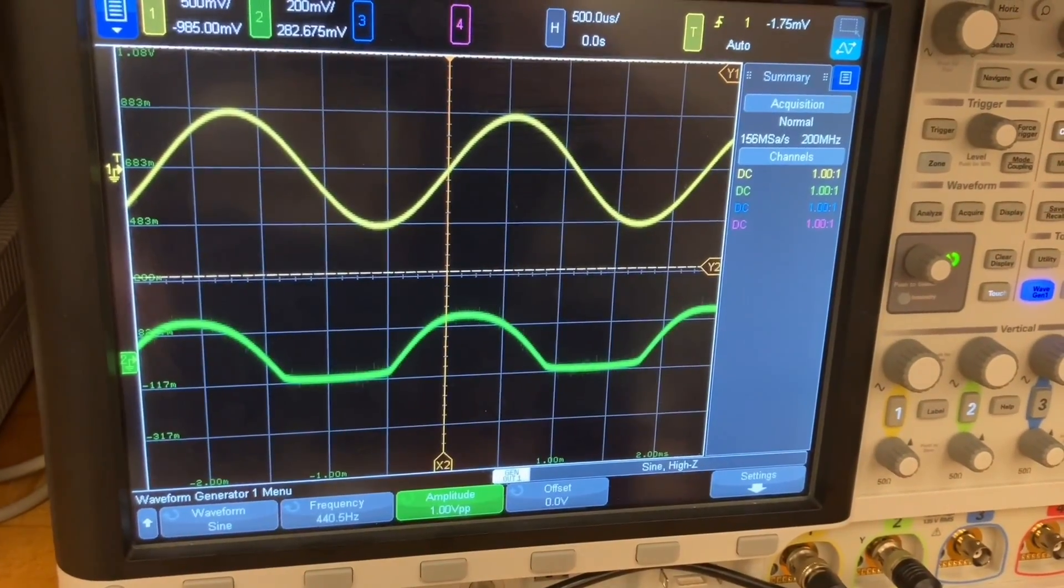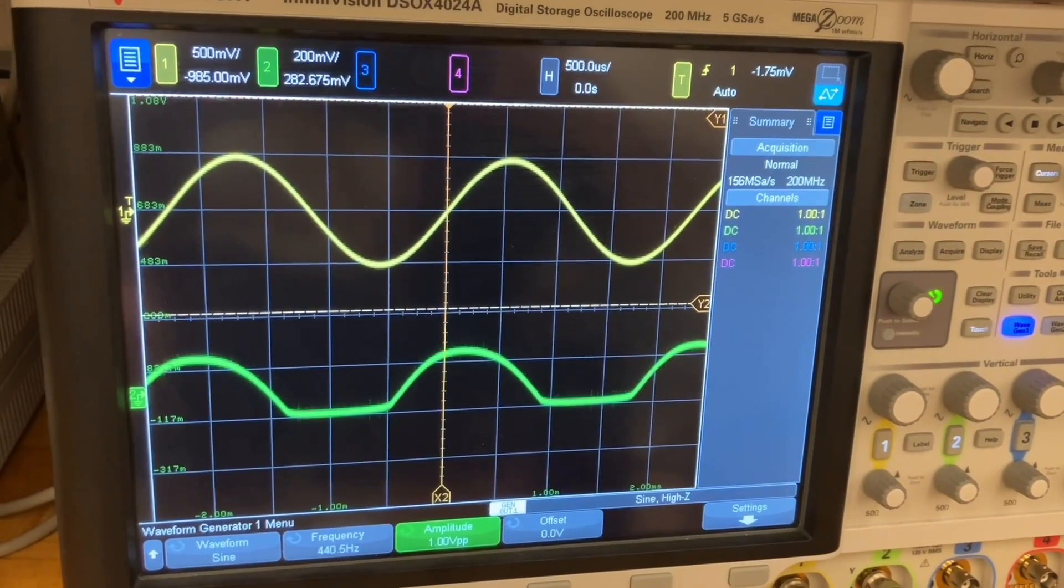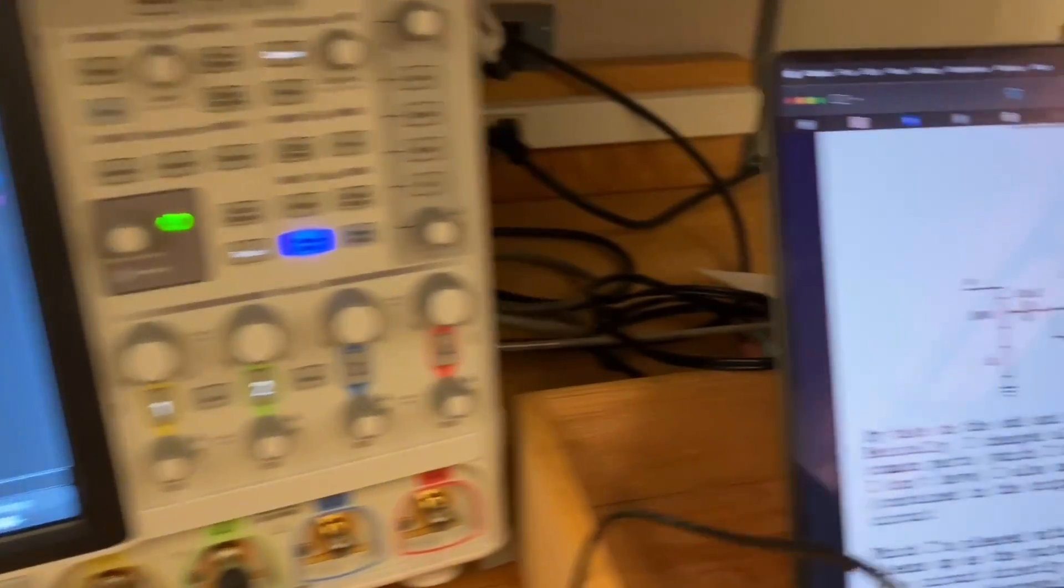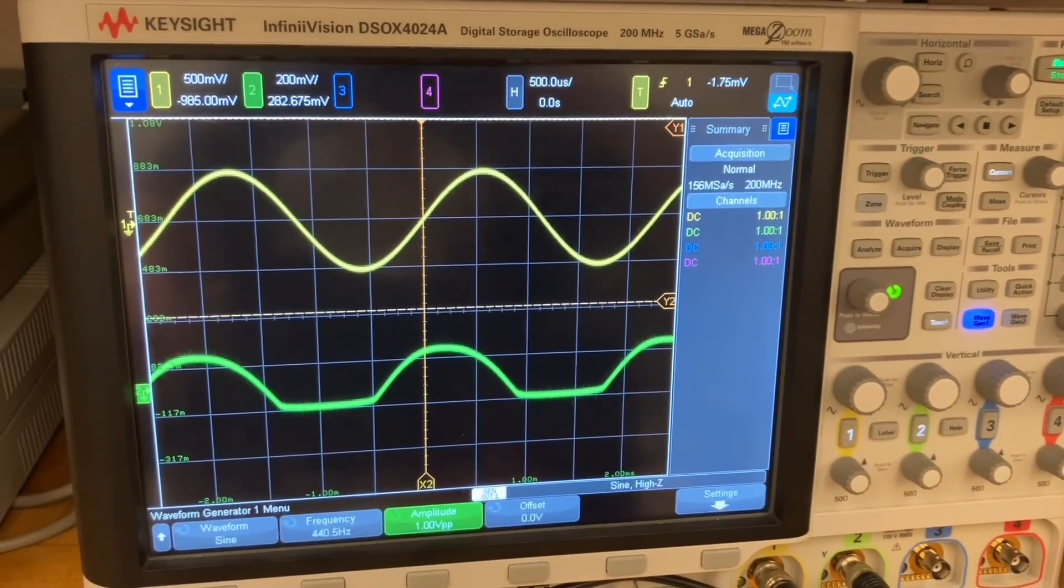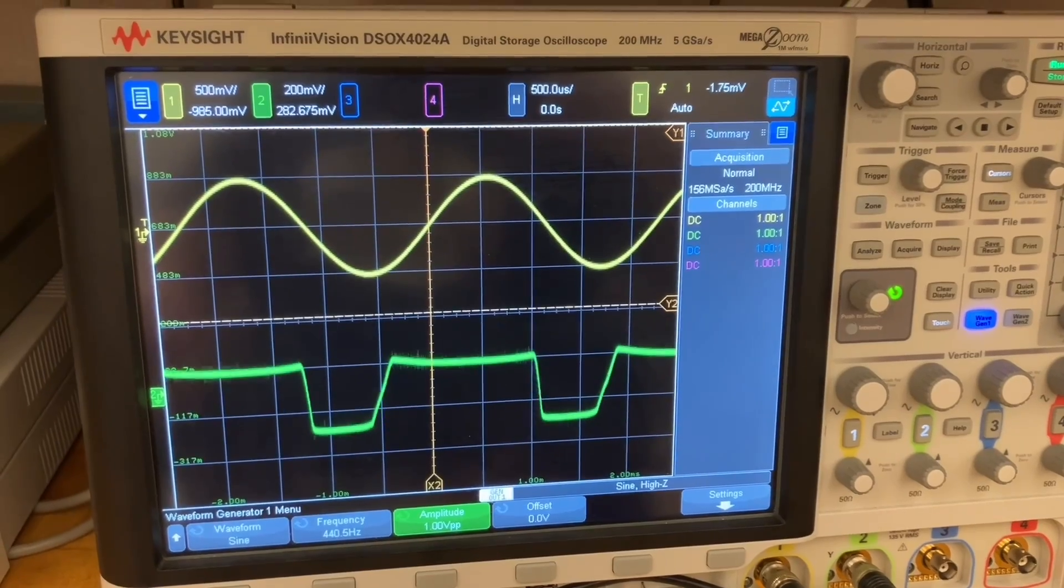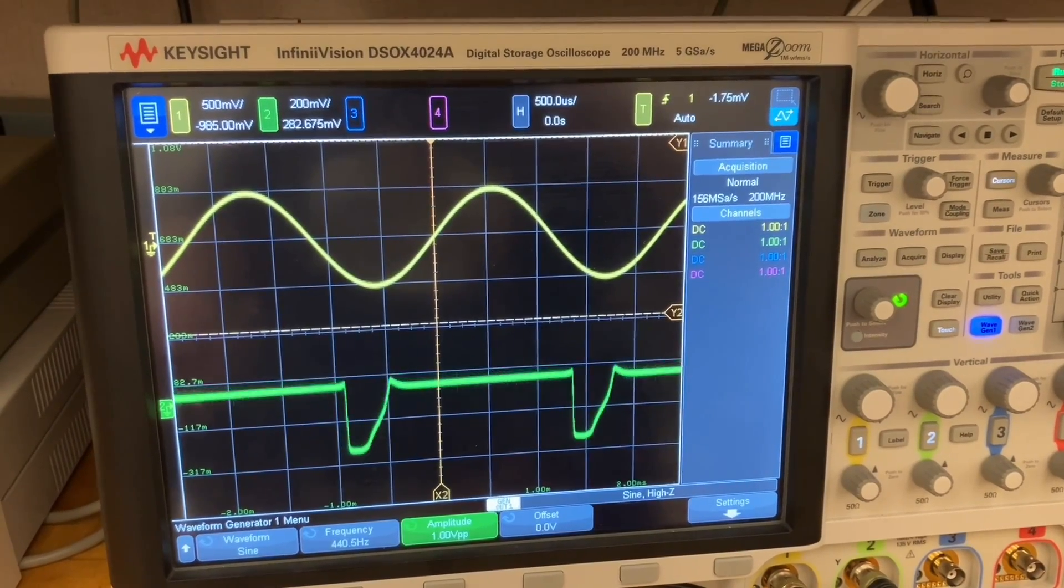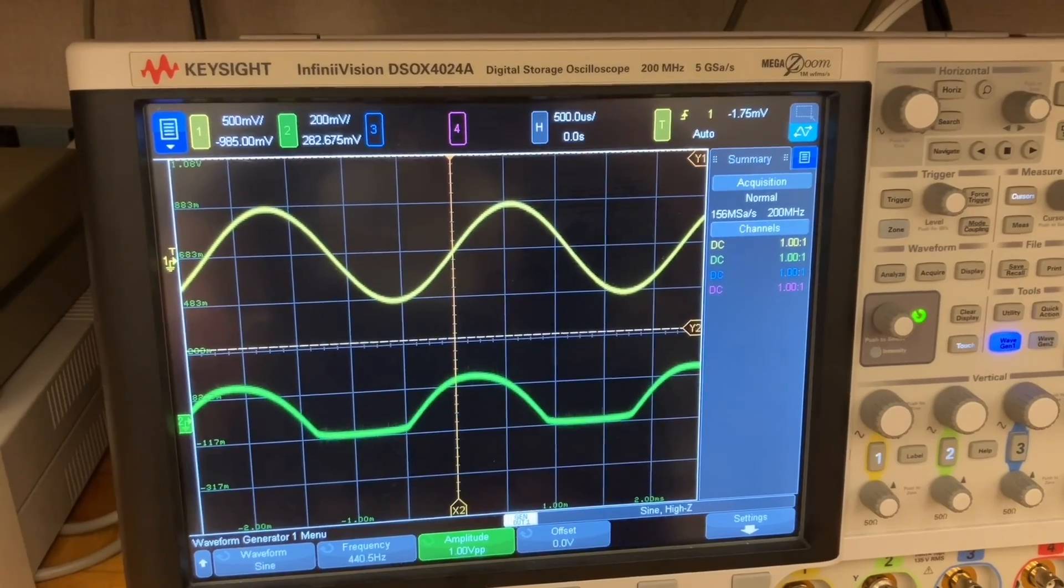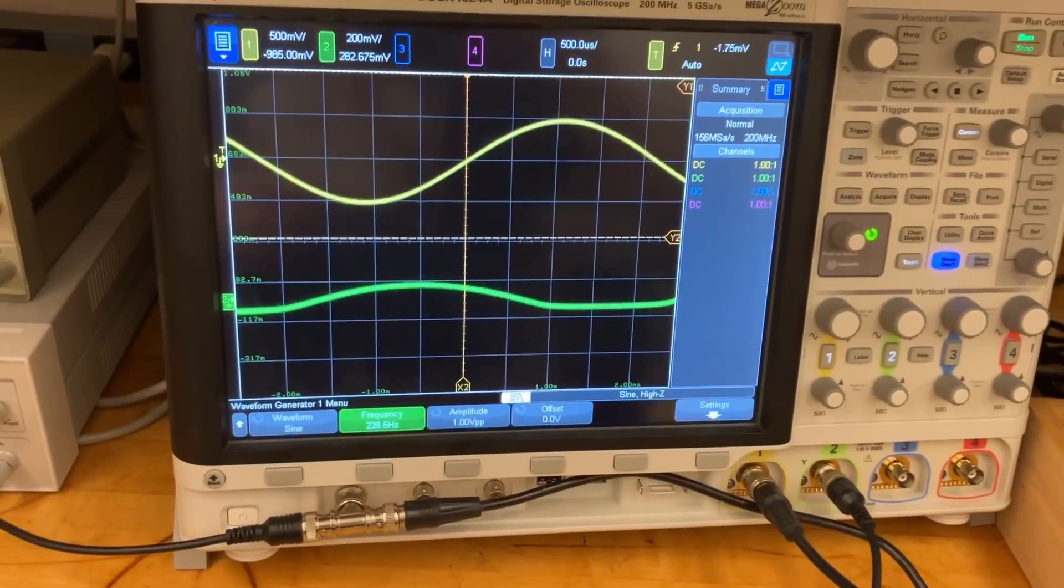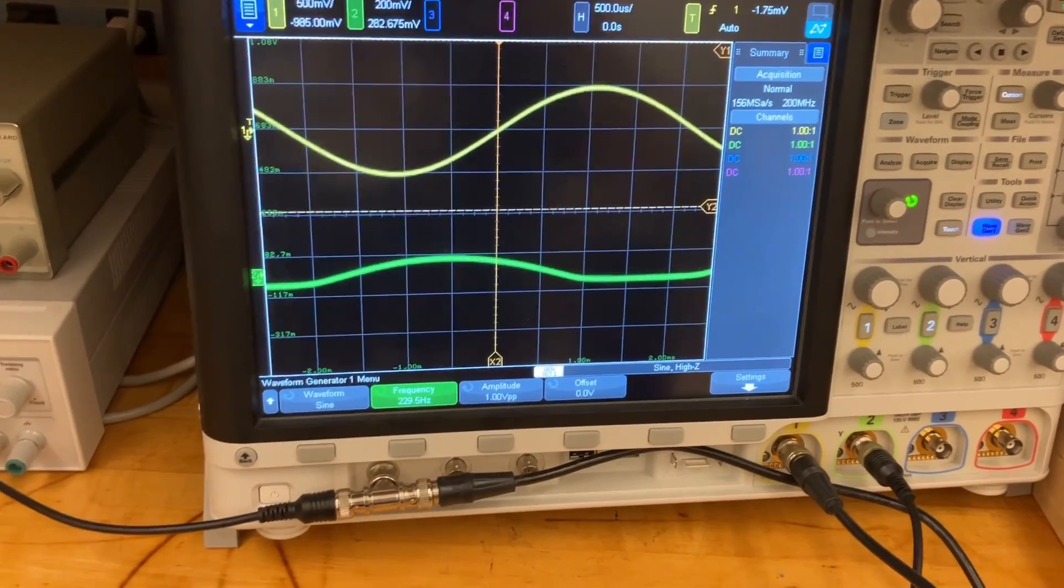Okay, let's listen to it. I have 1 volt peak-to-peak going in with the volume at the input turned all the way down. That's this input control here. And let's turn that up. Okay, that was 440 Hz. Now this is 220 Hz.